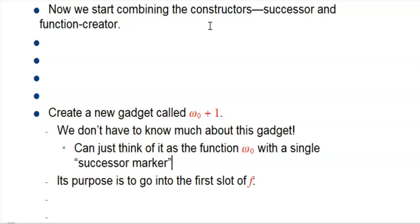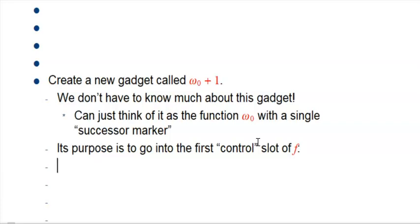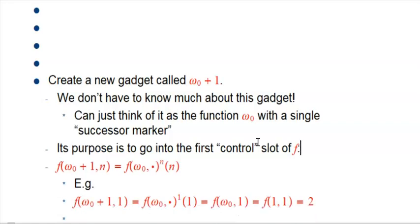Just take a function and put a little mark on it saying when we put this in the one place we want to put it—that first control slot of our f functions—we're going to know what to do with it. We don't need a new definition; we already know what to do with a successor in the first slot. So we have this formal gadget ω₀ + 1, the successor of ω₀. If we just follow the definitions, f(ω₀ + 1, n) should be just repeat f of ω₀ with an open slot n times with initial input n.